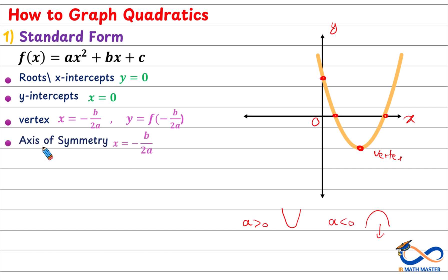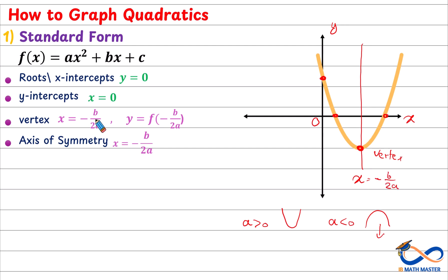Finally, we have the axis of symmetry, which is a vertical line in the middle of the graph. The x-coordinate of the axis of symmetry is negative b over 2a, which is the same as the x-coordinate of the vertex, because the vertex is always on the line of symmetry. This line divides the parabola into two identical and symmetrical parts.